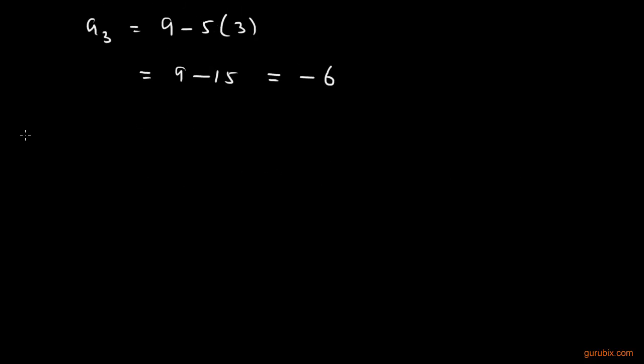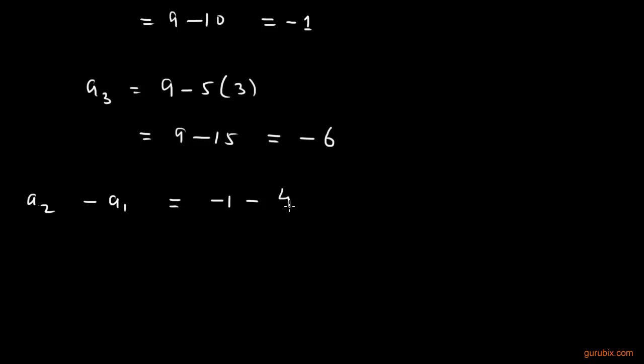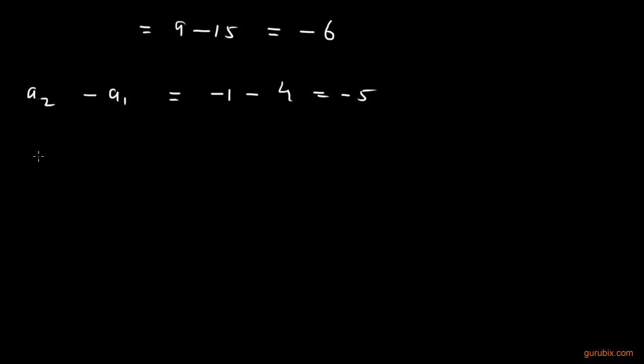Now, what we observe? We observe that if we subtract A1 from A2, we get minus 1 minus 4, this equals minus 5. And if we subtract A2 from A3, we get minus 6 minus minus 1, this means minus 6 plus 1, this is also equals to minus 5.